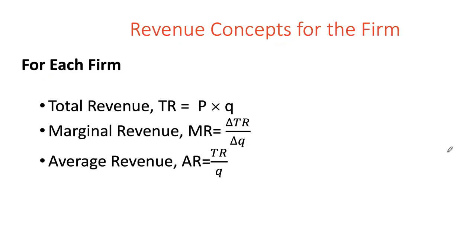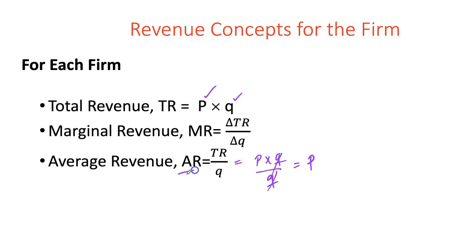Let's review some revenue concepts. For a firm under perfect competition, revenue is simply price times the output produced by the firm — price is given by the market. Marginal revenue is the change in total revenue because of one additional unit sold. Average revenue is revenue per unit, or total revenue divided by quantity. Note that average revenue will always equal price, because the firm under perfect competition is not dictating its own price — it's a price taker.